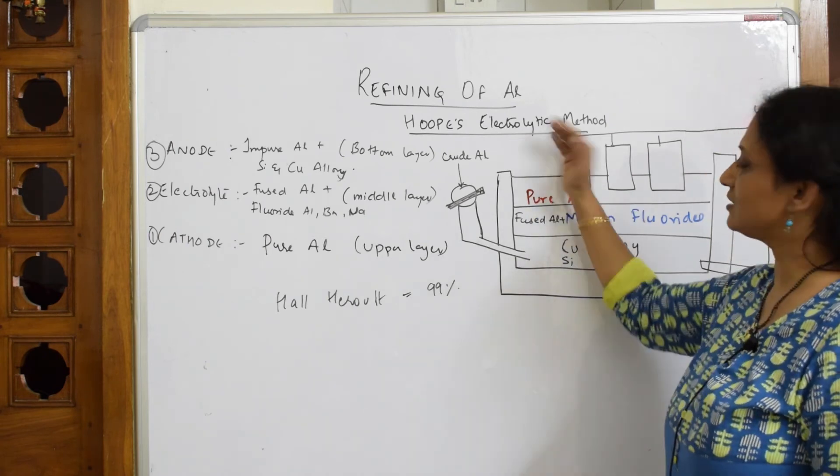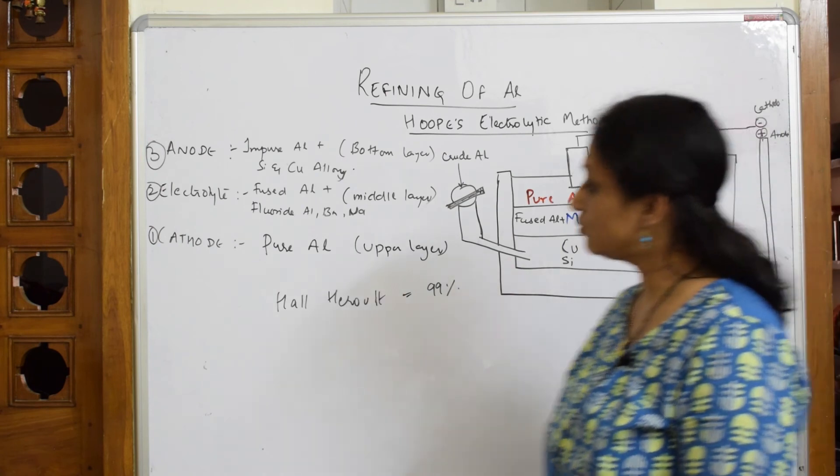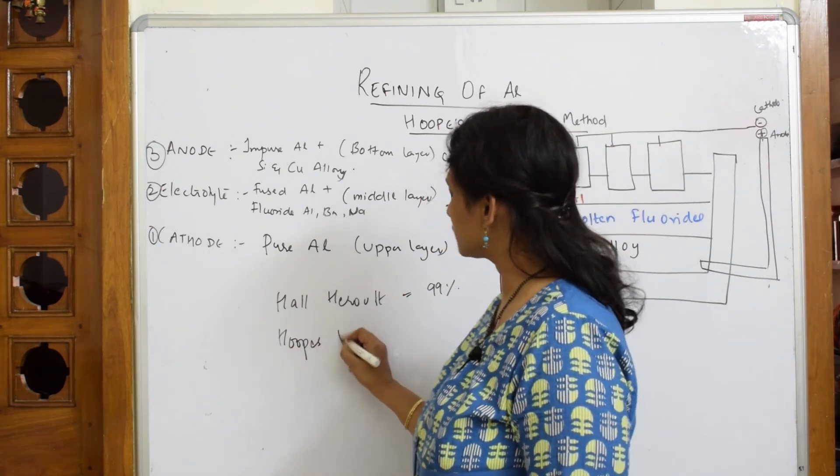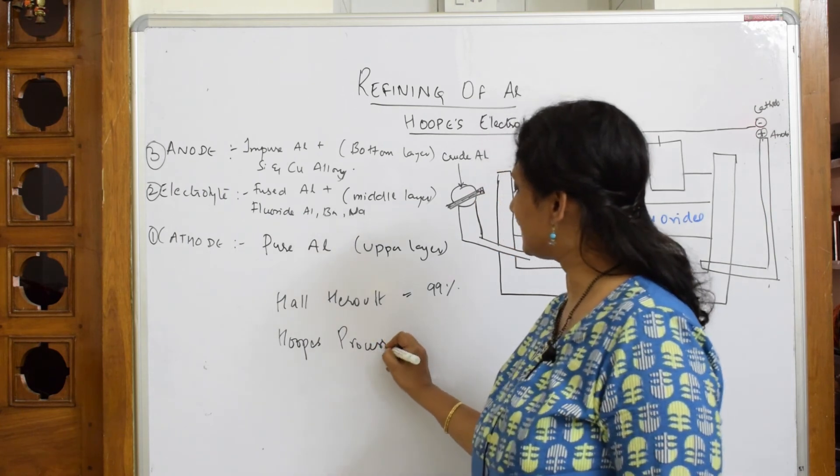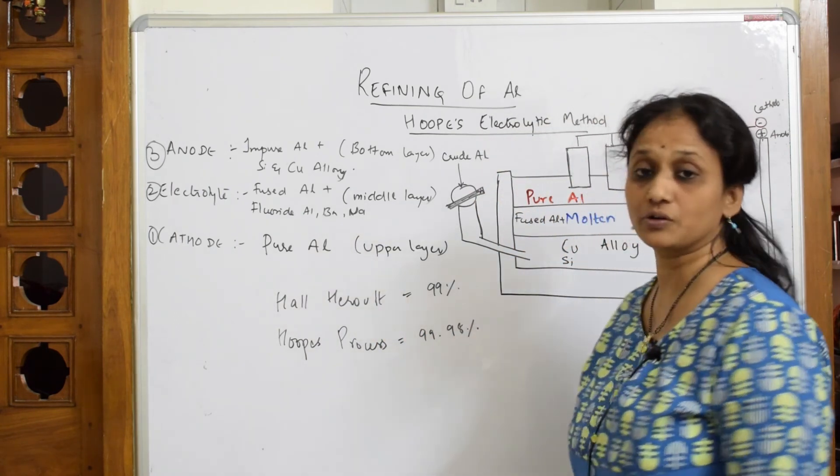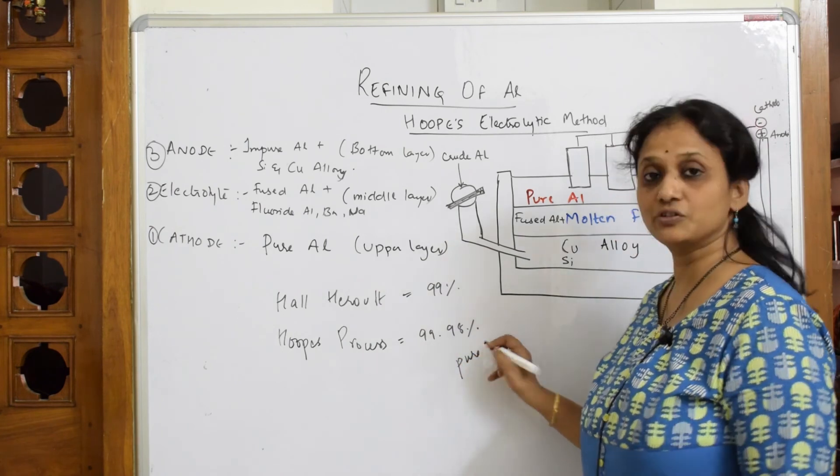Again from the second this is also collected and finally it is sent to the first layer and then it is scrapped off. So the amount of aluminum here by the process of Hoopes process, the amount of aluminum which we get is 99.98% pure. This is the perfection of this.